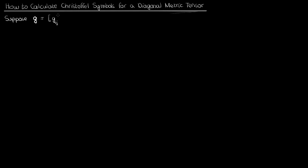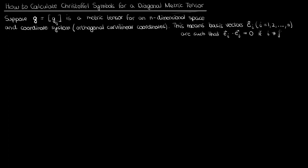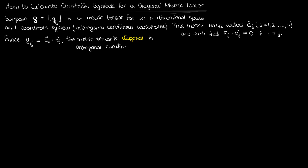Let's suppose that our metric tensor G with components G sub ij represents the metric tensor for an n-dimensional space and coordinate system with orthogonal curvilinear coordinates. That means that if the basis vectors for this space are given by E sub i, where i is a free index from 1 to n, then the dot product of E sub i and E sub j is 0 when i and j are not equal. Because the components G sub ij are defined as the dot product of E sub i and E sub j, the metric tensor is diagonal in orthogonal curvilinear coordinates — all the off-diagonal terms are 0.